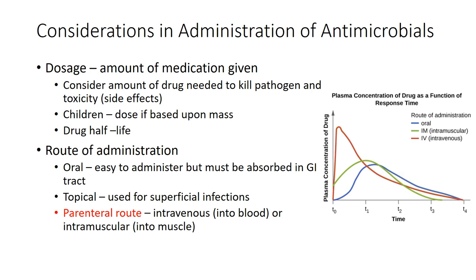The third route is probably one of the most important — the parenteral route. Parenteral is a fancy way of saying intravenous, meaning putting something directly into the blood, or intramuscular, putting something directly into the muscle. We can often get the quickest effect by placing the antimicrobial into the system via the parenteral route.